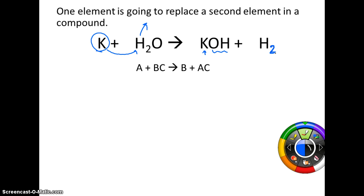So substance A plus BC is going to yield B plus AC. A is going to come in and kick the B part of the compound off. B is going to be by itself — if it's diatomic, we need to make sure we make it diatomic. And then A and C are going to be bonded together.